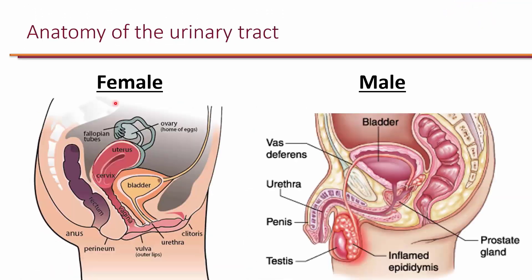Now let's take a look at the anatomy of the urinary tract. On the left you're looking at the urinary anatomy of females and on the right the urinary anatomy of males. The urethra is connected to the bladder, so urine exits the bladder through the urethra in both females and males. In females specifically, the urethra is very close to the rectum.